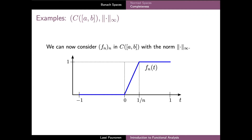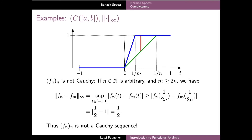For our next example, we change the norm on the same vector space and study the convergence properties of this same sequence fn using the infinity norm, which is defined using the supremum. We will see that fn is actually not a Cauchy sequence with respect to the infinity norm.